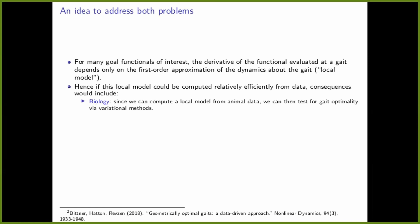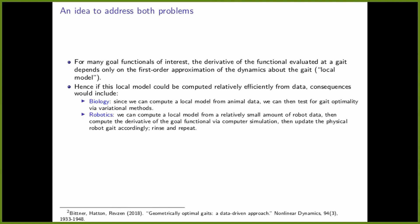So if you could compute a local model relatively efficiently from data, then in biology you could compute a local model from animal data and directly test for gait optimality using standard calculus of variations methods. On the robotic side, you could compute a local model from a relatively small amount of robot data, compute the derivative of the goal functional via computer simulation — offloading the hardware-intensive part to the computer — then update the physical robot gait according to what the computer says, and rinse and repeat.